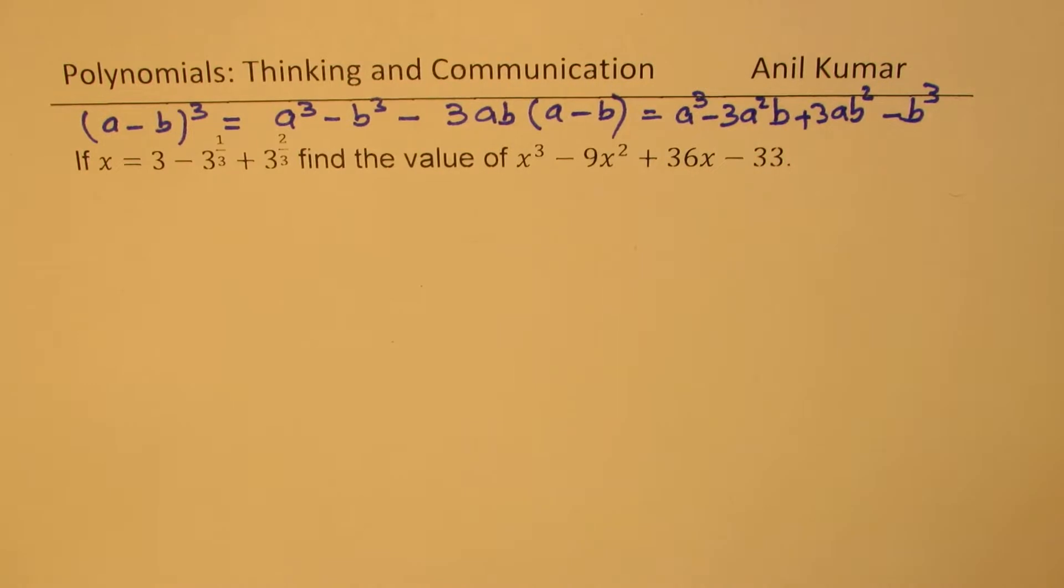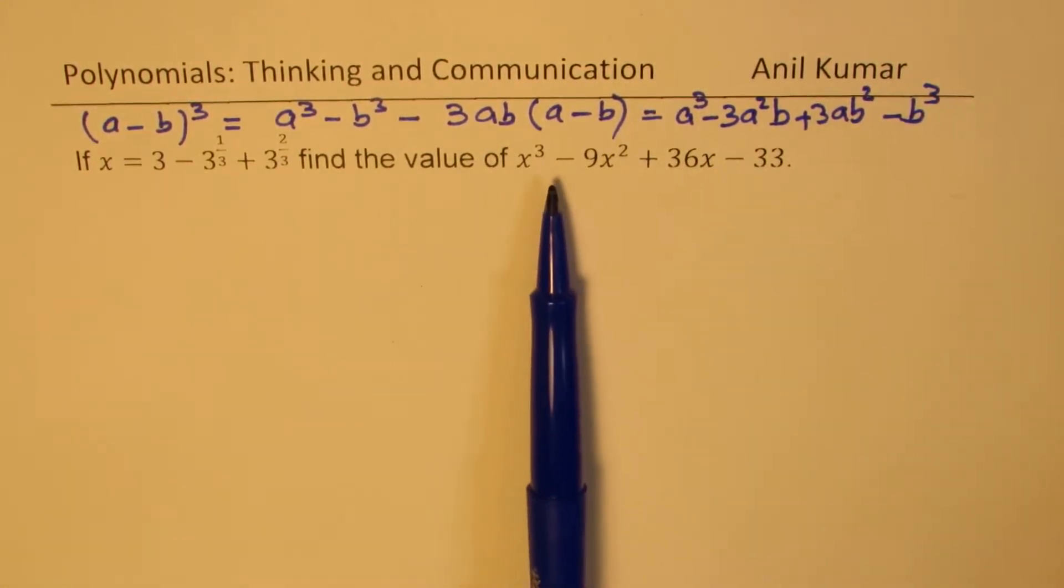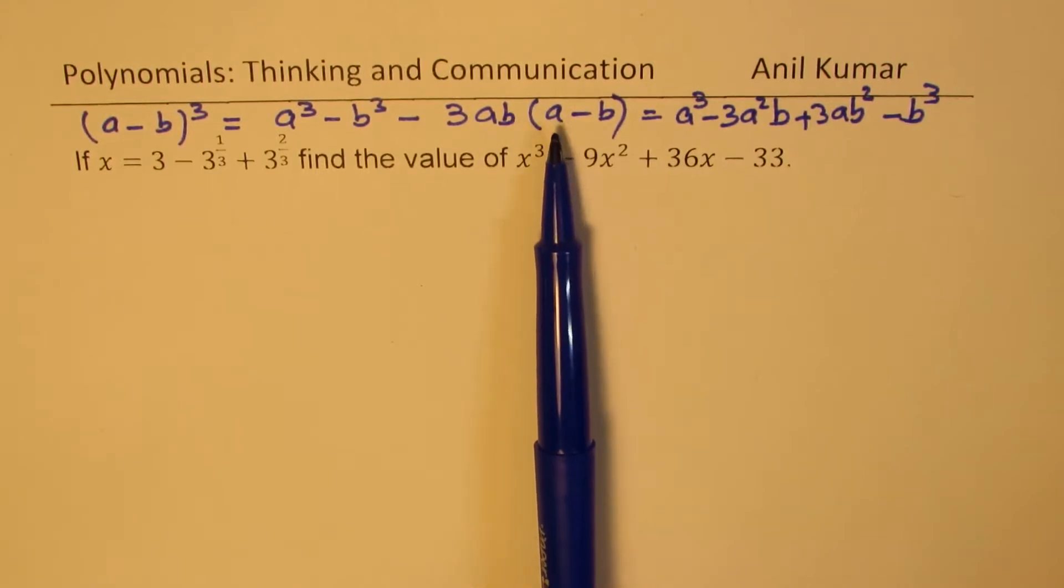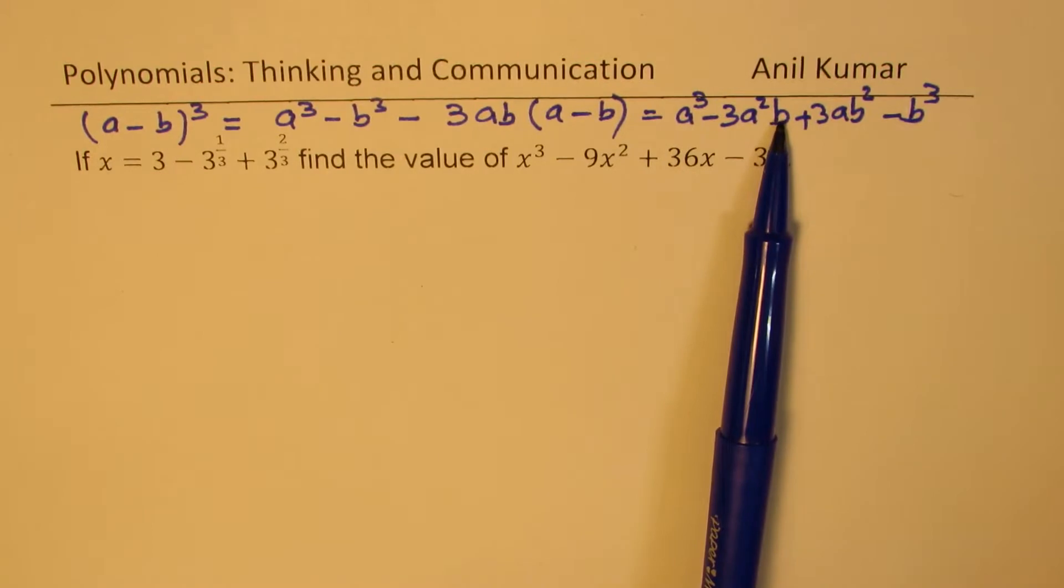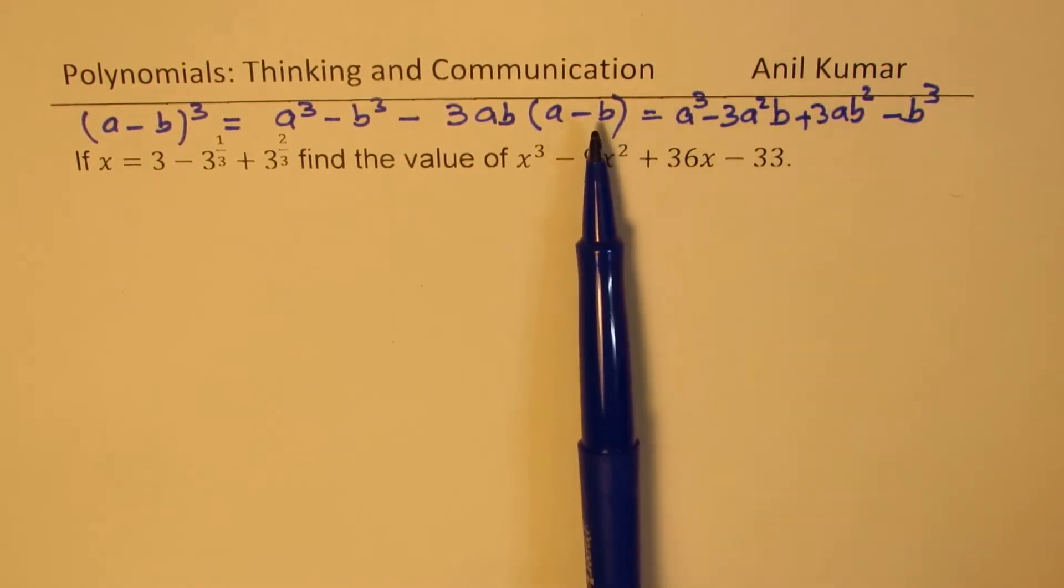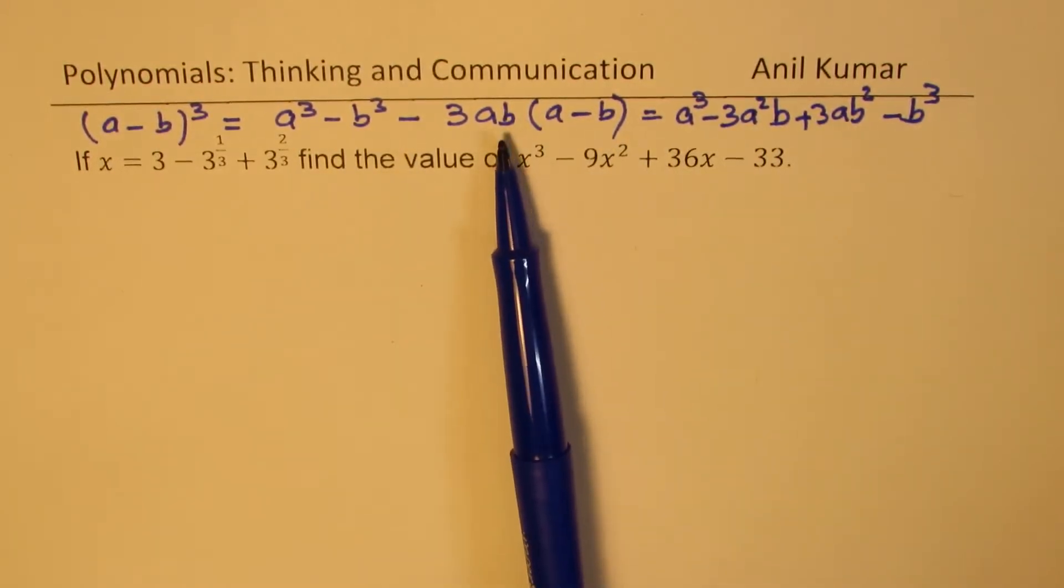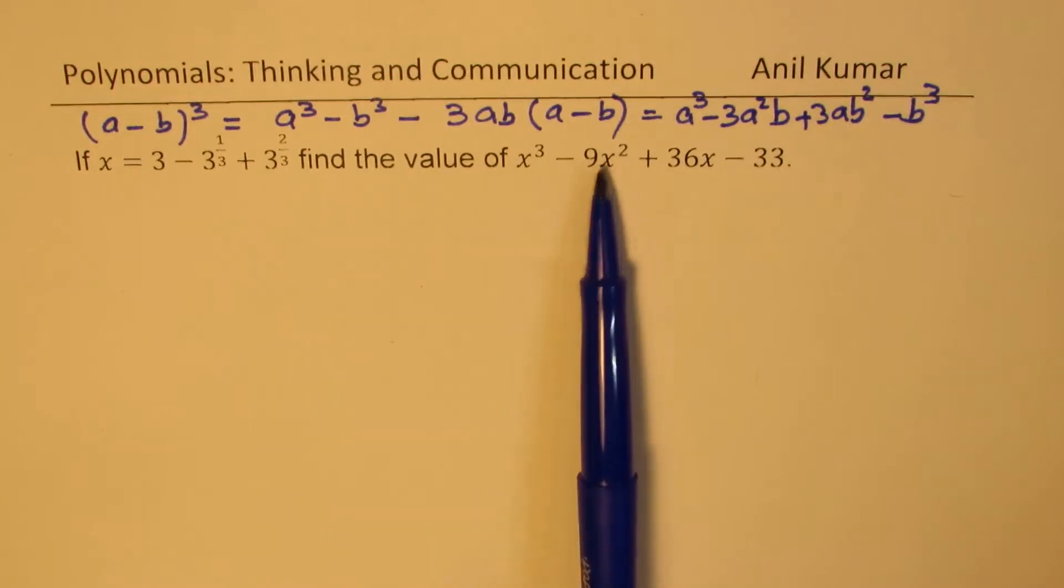So either way you could actually write. However, for solving such questions, keeping this in that form where you can take 3ab common and so you get a minus b, this is a better form to use when solving such questions.